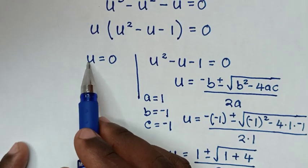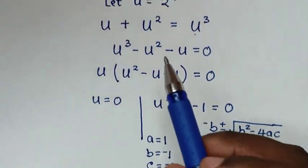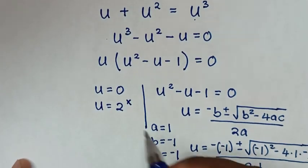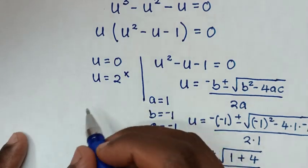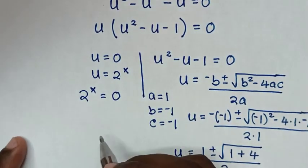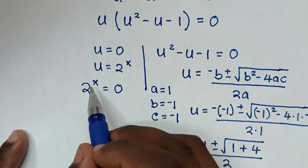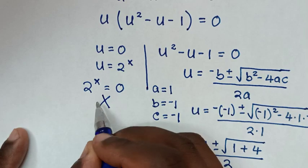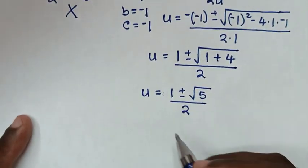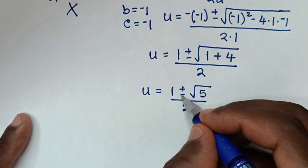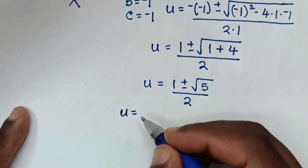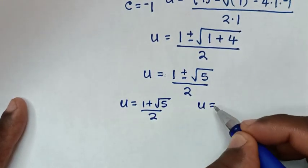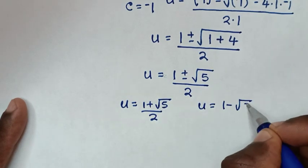Now we have the value of u from the quadratic equation, and also u equals 0 from the first factor. But recall we let u equal 2 power x. Comparing 2 power x equals 0: since 2 to the power of any number is always greater than 0, this is not possible, so the first solution is rejected. From the quadratic we have two values: u equals 1 plus square root of 5 over 2, and u equals 1 minus square root of 5 over 2.